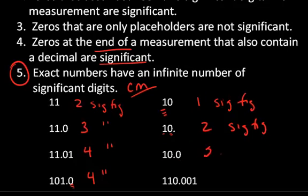10.0, that would be three sig figs because we have that trailing zero. And 110.001, these are all sandwiched in, so this would have six sig figs.